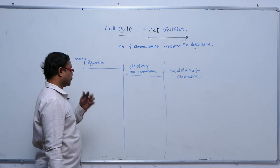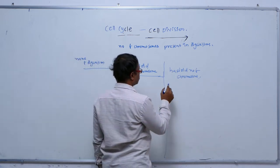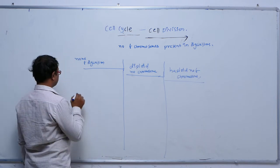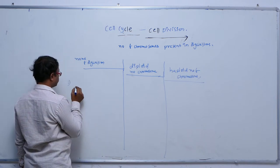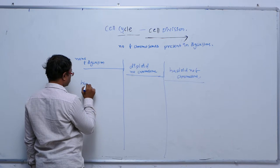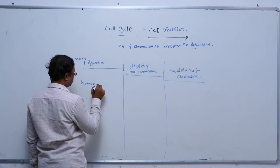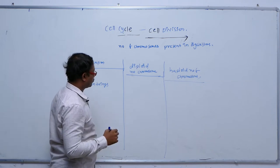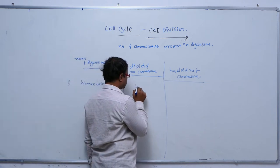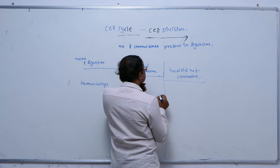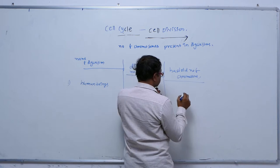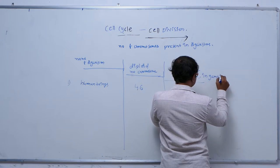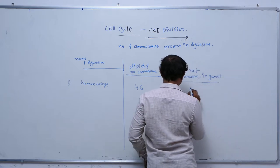First one, we take human beings. The diploid number of chromosomes is 46, and the haploid number of chromosomes in gametes is known as 23.